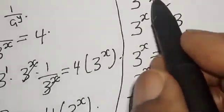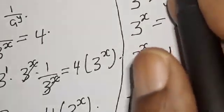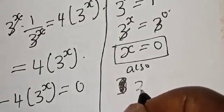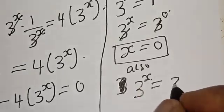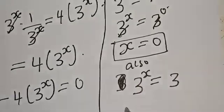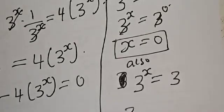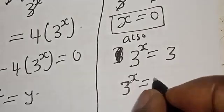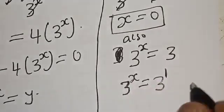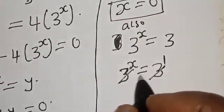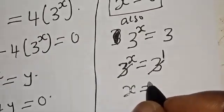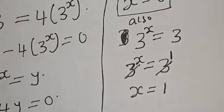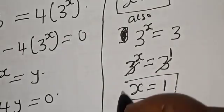Now let's work with the second case where y equals 3. We have 3 raised to power x equals 3, which we write as 3 raised to power x equals 3 raised to power 1. They have the same base, so we cancel it. Therefore x is equal to 1. That is the second value of x.